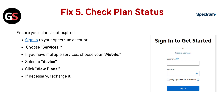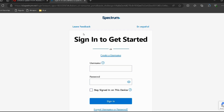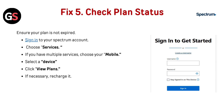Fix 5: Check account status. Ensure your plan is not expired. Sign in to your Spectrum account. Go to Services, and if you have multiple services, choose your mobile, then select a device. Click on View Plans, and if necessary, recharge it.